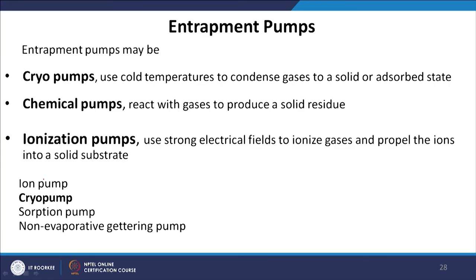Entrapment pumps adsorb gas molecules or ions. Cryopumps use cold temperatures to condense gases to a solid or adsorbed state. Chemical pumps react with gases to produce a solid residue. Ionization pumps use strong electrical fields to ionize gases and propel ions into a solid substrate. Ion pumps, cryopumps, absorption pumps, and non-evaporative getter pumps all require regeneration of the surface, since ions and molecules get absorbed there — making the process complex. Entrapment pumps are used with molecular and turbo pumps to create ultra-high vacuum.